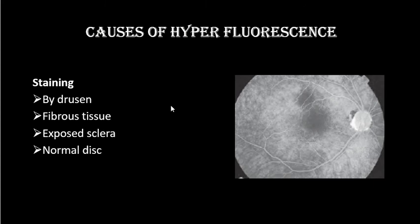Staining is the fourth cause of hyperfluorescence, and it comes in the late phases of the angiogram. It is caused by drusen, fibrous tissue, exposed sclera, and also the normal disc shows late staining. So the four causes of hyperfluorescence are: autofluorescence, RPE window defect, pooling, leakage, and staining.